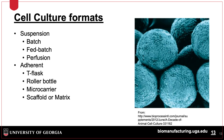Suspension cells can be grown using a variety of strategies, including batch, fed-batch, and perfusion modes, while adherent cells have fewer options for production. Adherent cells instead can be grown on a variety of surfaces, including T-flasks and roller bottles. Microcarriers and other scaffolds allow for suspension growth by giving the cells a surface to attach to that is free-floating.